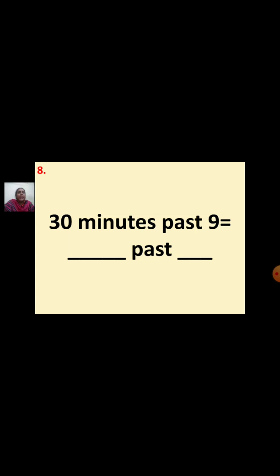Eighth question: 30 minutes past 9 equal to dash past dash. You know 30 minutes means half an hour. So, 30 minutes past 9 can be written as half past 9. Remember, 30 minutes means half an hour, so you can write half past 9.